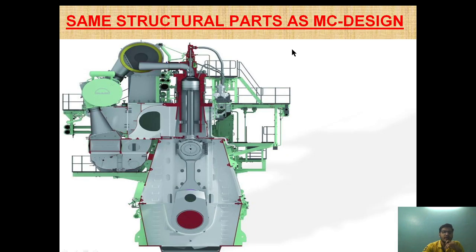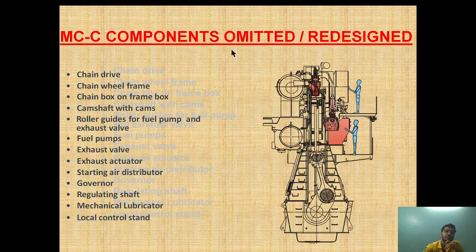Now let's move to the next slide. This shows the main engine with its modification. The overall structural design of the ME engine is almost the same, but modifications have been made for electronic control — some parts have been replaced and new parts have been added. We are now comparing the MC series, the older camshaft-controlled version, with the electronic version.